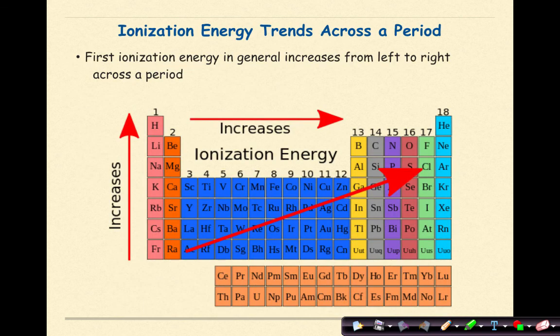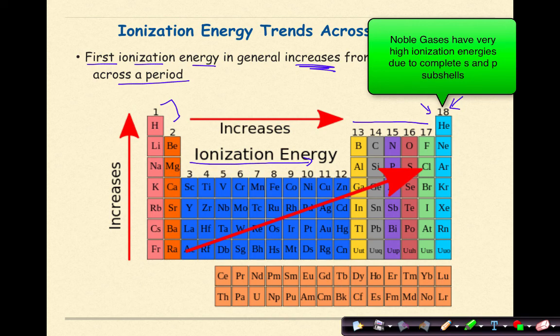Ionization energy trends across the period. First ionization energy, in general, increases from left to right across the period. This is primarily because we go from our metals, like in group 1 and group 2, they release their electrons very easily because they want to look like the closest noble gas. We see an increase in ionization energy as we go through the transition metals, and then definitely through groups 13 through 17, high ionization energies, because they would much rather gain an electron to get our full octet rather than lose them. They're more apt to hold on to their valence electrons.